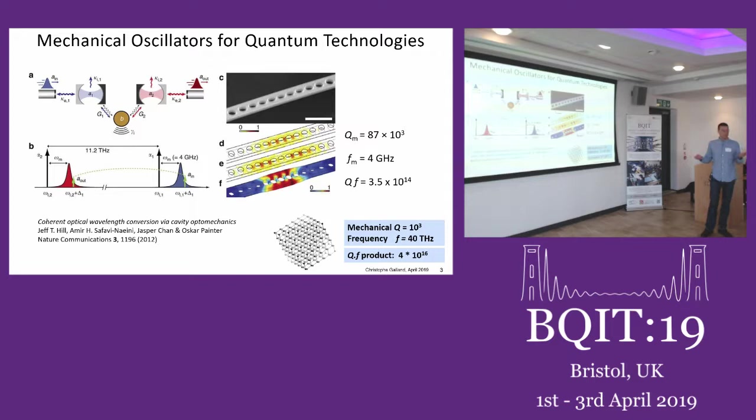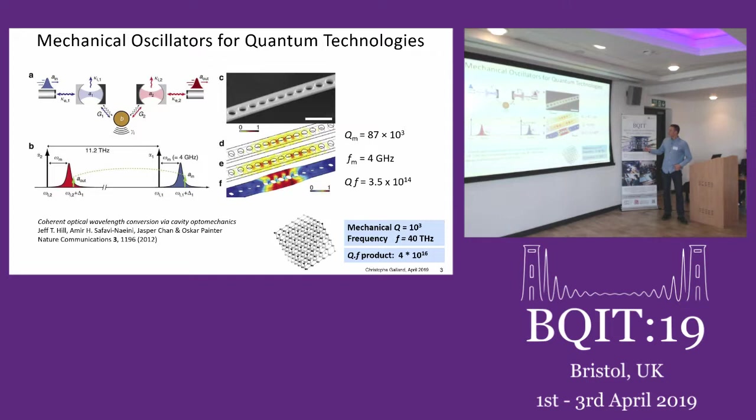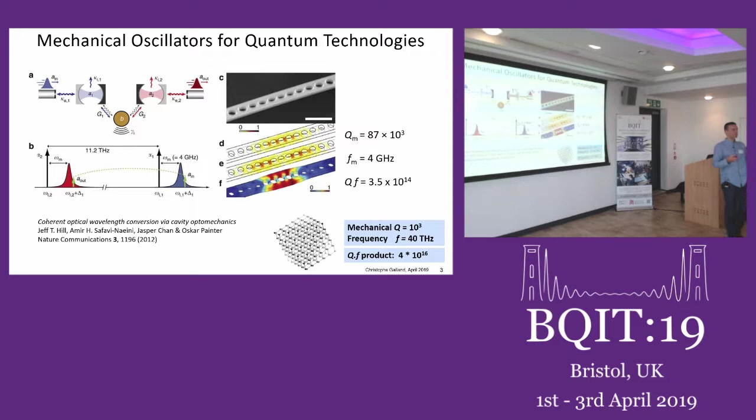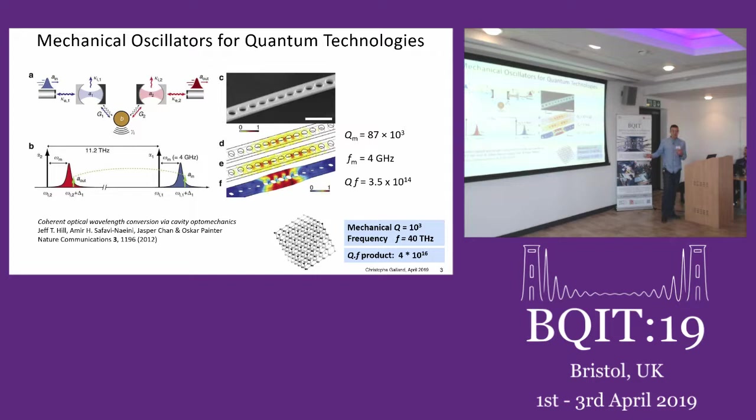The mechanical quality factor and the frequency of the devices give a QF product of 10¹⁴. This is a figure of merit that tells you how good your oscillator is for quantum experiments, because the higher the frequency, the easier it is to cool and get rid of thermal noise. If you just take bulk diamond, as I will show in the results of my experiment, you get a slightly lower mechanical Q at room temperature, but with a much higher frequency, you are actually in a better QF product.